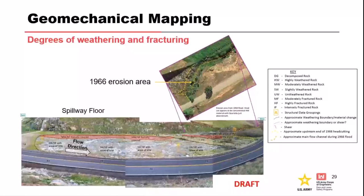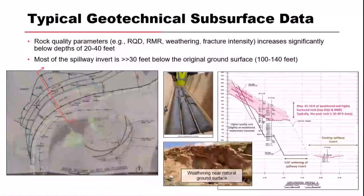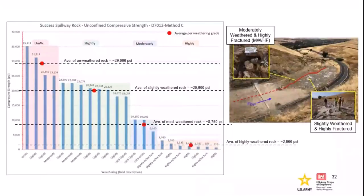Piling all the data, reviewing logs, putting it on cross-sections and going back through all analysis — we keep adding data to our conceptual model. Lab testing showed unconfined strengths associated with different weathering grades: almost 30,000 PSI down to 20,000 PSI for fresh material — really strong stuff. Even moderately weathered rock was almost 9,000 PSI. You wouldn't normally think of this as highly erodible. But the highly weathered, possibly sheared or highly fractured material was down around 2,000 PSI — a little concerning.